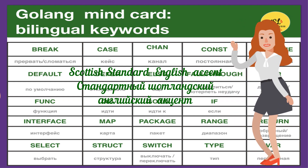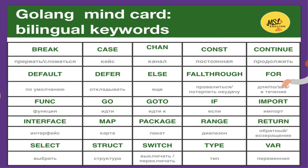Hi guys, I'm Fiona from Scotland — Great Britain, not Northern Ireland. Let's get started to repeat 25 keywords of the Go language with my Scottish Standard English accent. Break. Case. Chan. Constant. Continue. Default. Defer. Else. Fallthrough. For. Func. Go. Goto. If. Import. Interface. Map. Package. Range. Return. Select. Struct. Switch. Type. Var. Guys. Well done.